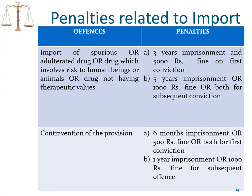We have had a brief overview of the import of drugs — the licenses, the forms in which applications are made, and the forms in which licenses are procured. Drugs may be imported for manufacture or sale, for personal use, by government institutions and hospitals, or solely for examination, test, and analysis. Two documents are important in connection with import of drugs: the registration certificate and the import license. We now come to the penalties levied if the conditions given in the DNC Act and Rules are not complied with.